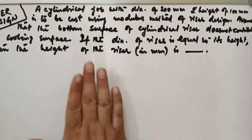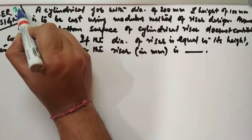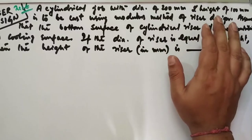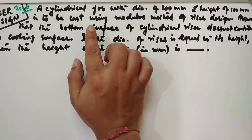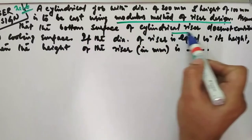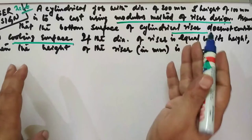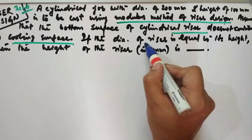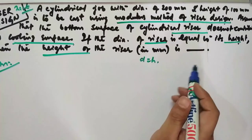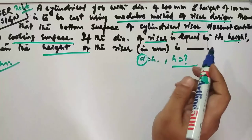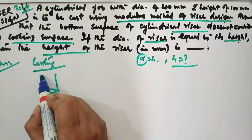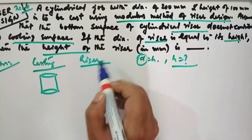Now let us consider another problem from a previous year GATE paper. A cylindrical job with diameter 200 mm and height 100 mm is to be cast using the modulus method of riser design. Assume that the bottom surface of the cylindrical riser does not contribute as a cooling surface — i.e., it is insulated. The diameter of the riser equals its height. We need to calculate D, the diameter of the riser. The casting is cylindrical and the riser is also cylindrical.